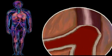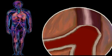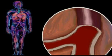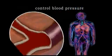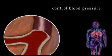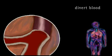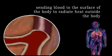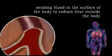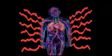For example, the smooth muscle tissue surrounding your blood vessels can contract to constrict the blood vessels and make it harder for blood to flow to certain areas. This can control blood pressure and divert blood to where it is most needed, such as sending blood to the surface of the body to radiate heat outside the body.